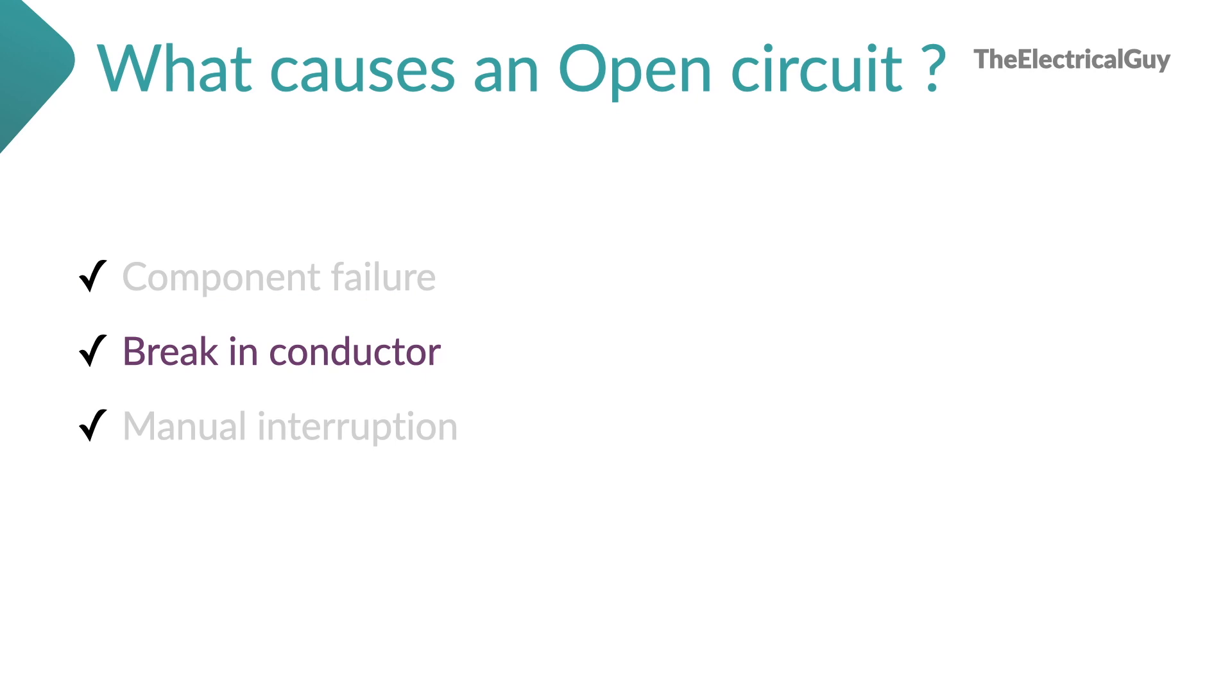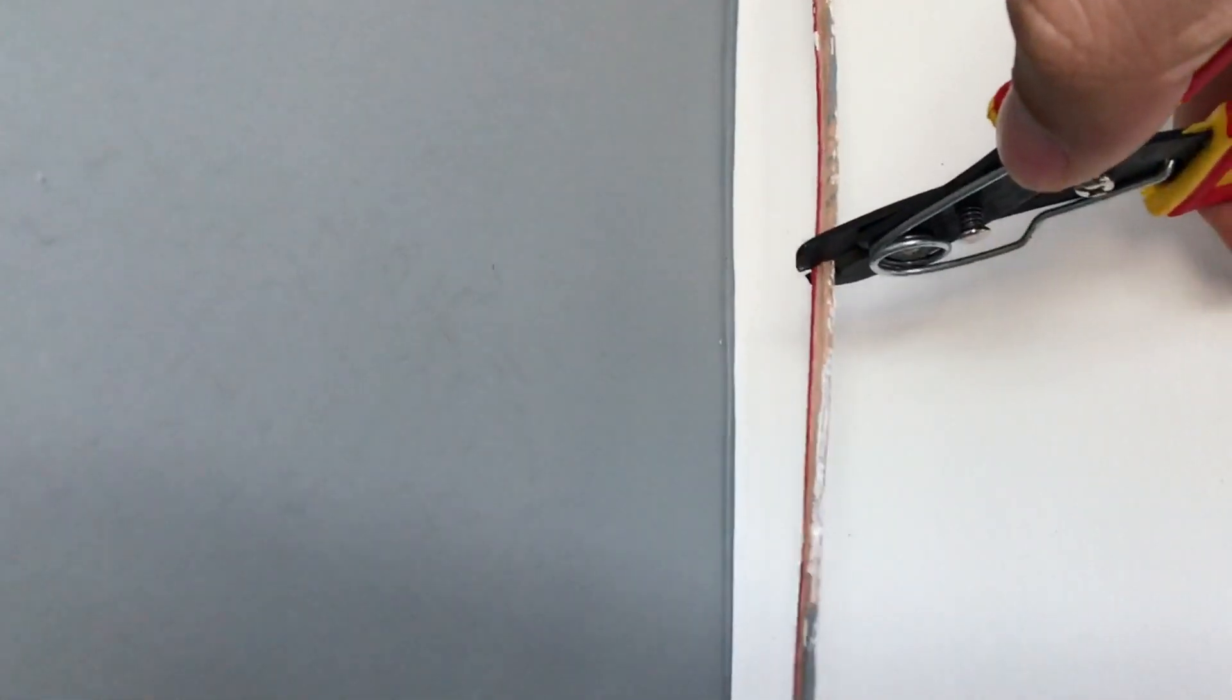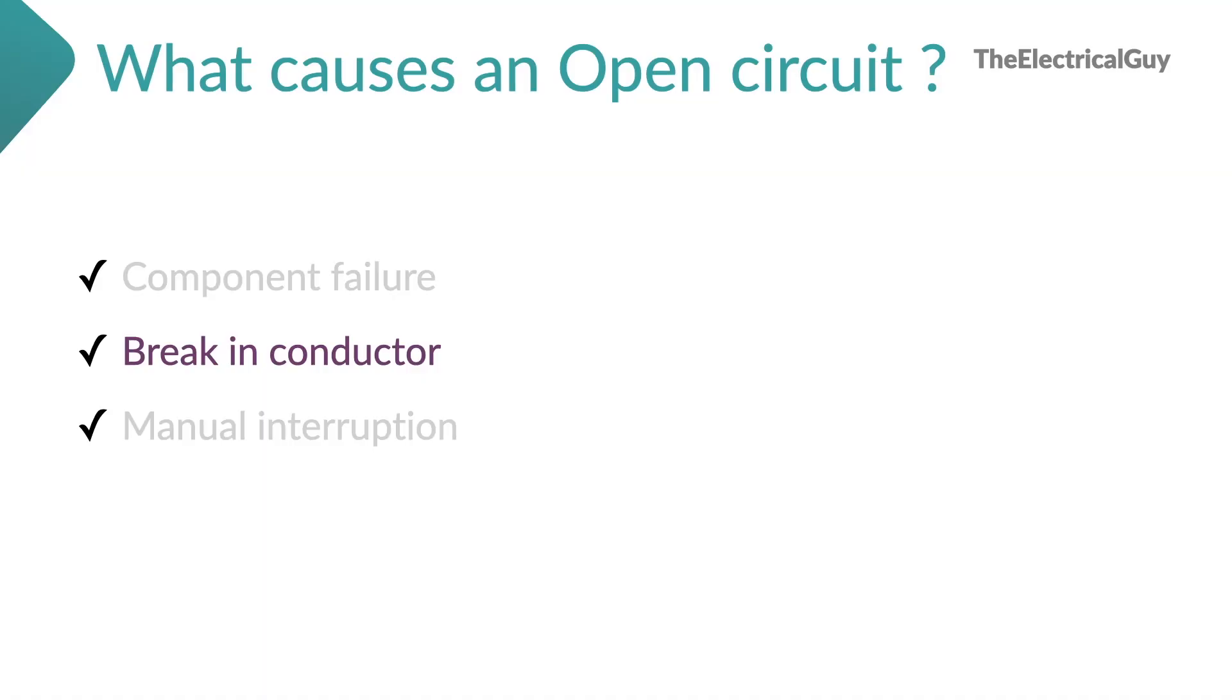Brake in conductor can happen because of multiple reasons. Conductor can brake because of aging or wear and tear. Conductor can brake accidentally or maybe intentionally as well. There are multiple reasons for that.